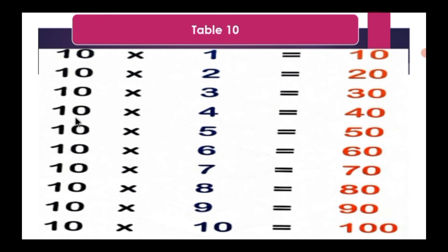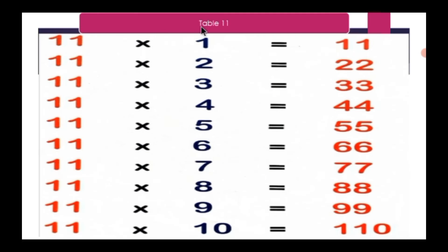Once again: 10 ones are 10, 10 twos are 20, 10 threes are 30, 10 fours are 40, 10 fives are 50, 10 sixes are 60, 10 sevens are 70, 10 eights are 80, 10 nines are 90, 10 tens are 100.